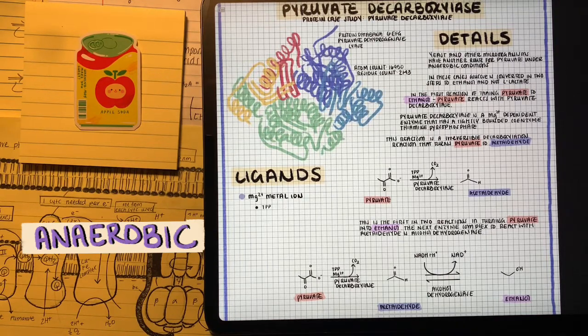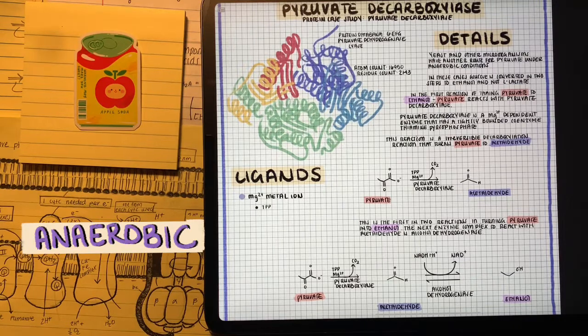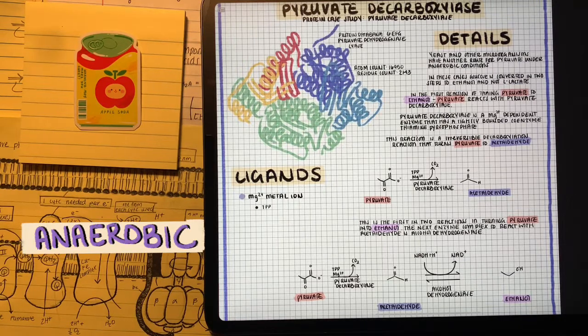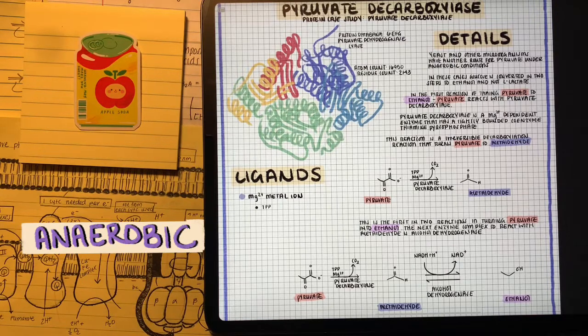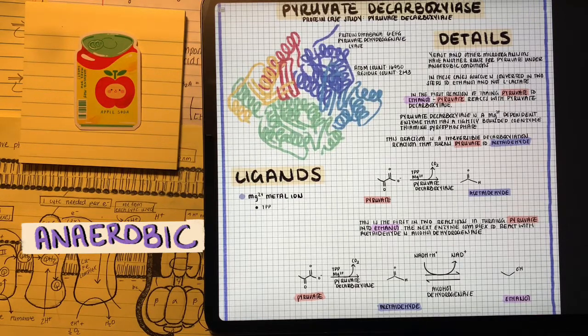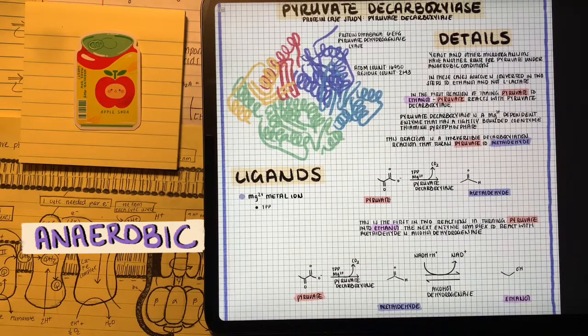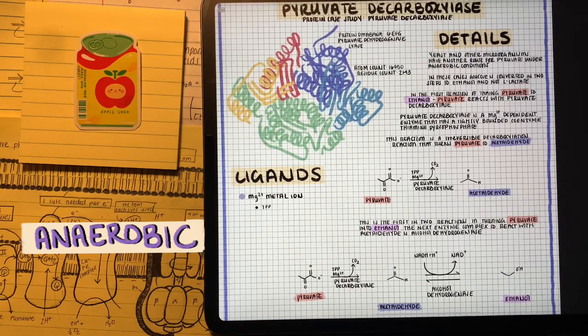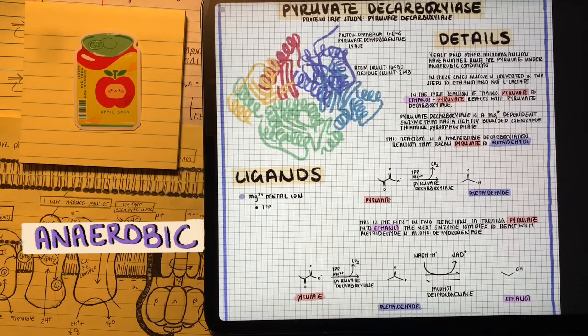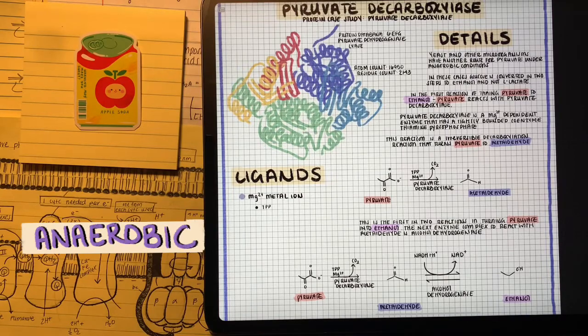What this enzyme does, pyruvate decarboxylase, is the first one. This one's two steps instead of one. Pyruvate is going to react with pyruvate decarboxylase, which is going to remove CO2 to form acetaldehyde. Acetaldehyde is going to react with alcohol dehydrogenase, help us form NAD+ by reducing acetaldehyde to form ethanol. And this is how we get alcohol.